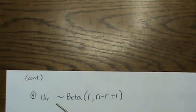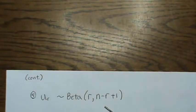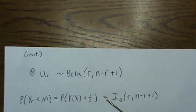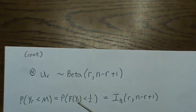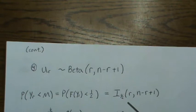Well, the Rth order statistic can be shown to be a beta distribution. So now to calculate this probability that Y_R is less than the median is the same as the probability that the CDF of Y_R is less than a half. Well, because F of Y_R is a beta distribution, this is what's called an incomplete beta distribution. So we're integrating a beta distribution from zero to one half.